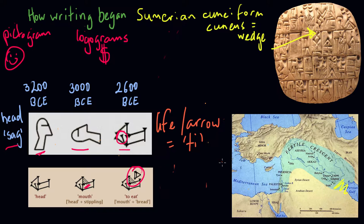So the solution is to take the symbol for arrow and to use it to represent life as well. And this is what linguists call the Rebus Principle. The process of using a symbol purely for its sound value, regardless of its original meaning.